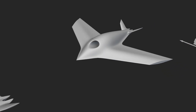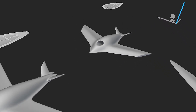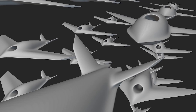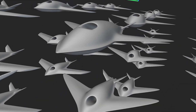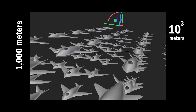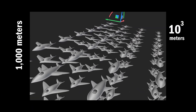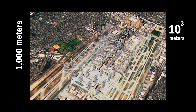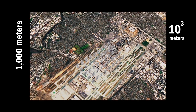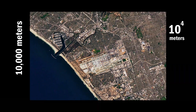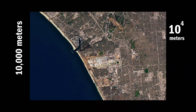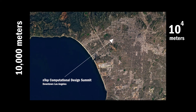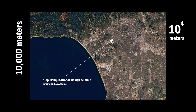We now zoom out past 100 meters — the distance a man can run in 10 seconds. We explore 125 variations of this concept design. At 1 kilometer — 1,000 meters, the distance a race car can drive in 10 seconds — we reach 10 kilometers, the distance a supersonic aircraft can travel in 10 seconds. The NTOP computational design summit comes into view.